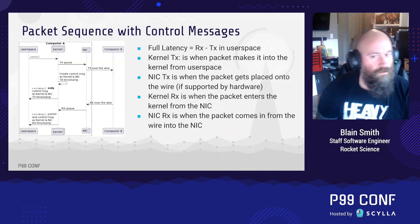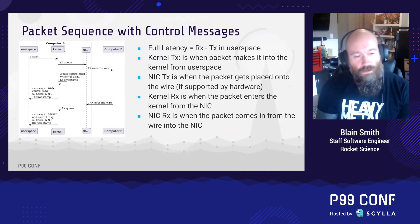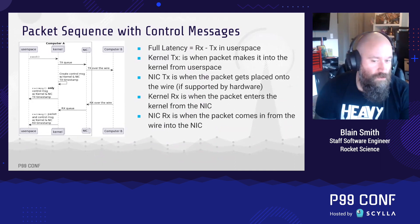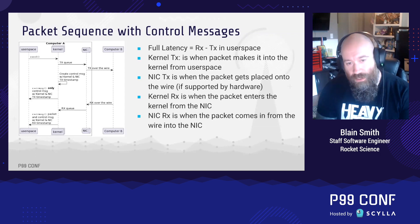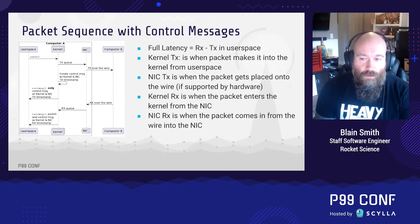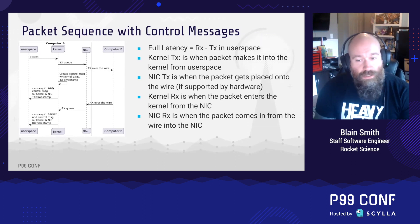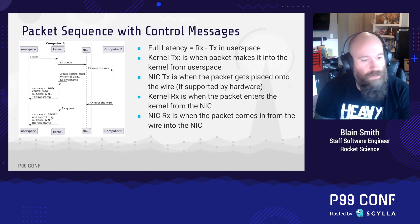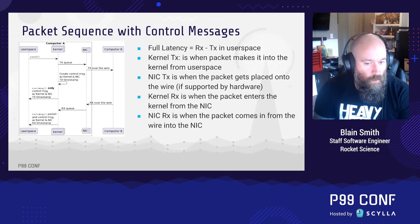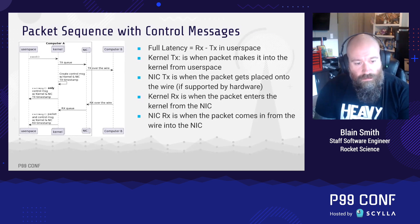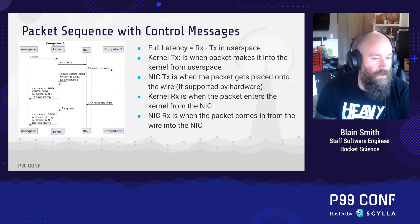We can leverage control messages in the Linux kernel that will send messages back up to user space when packets hit certain layers in the kernel and on the NIC. So we can get the kernel outgoing time when the packet makes it from the kernel to user space, and then we can get the NIC outgoing time when the packet actually gets placed onto the wire — if the actual network card supports timestamping. The same is true for the reverse: we can get the time when a packet actually hits the network card from the wire and then when the kernel sends it up into user space.